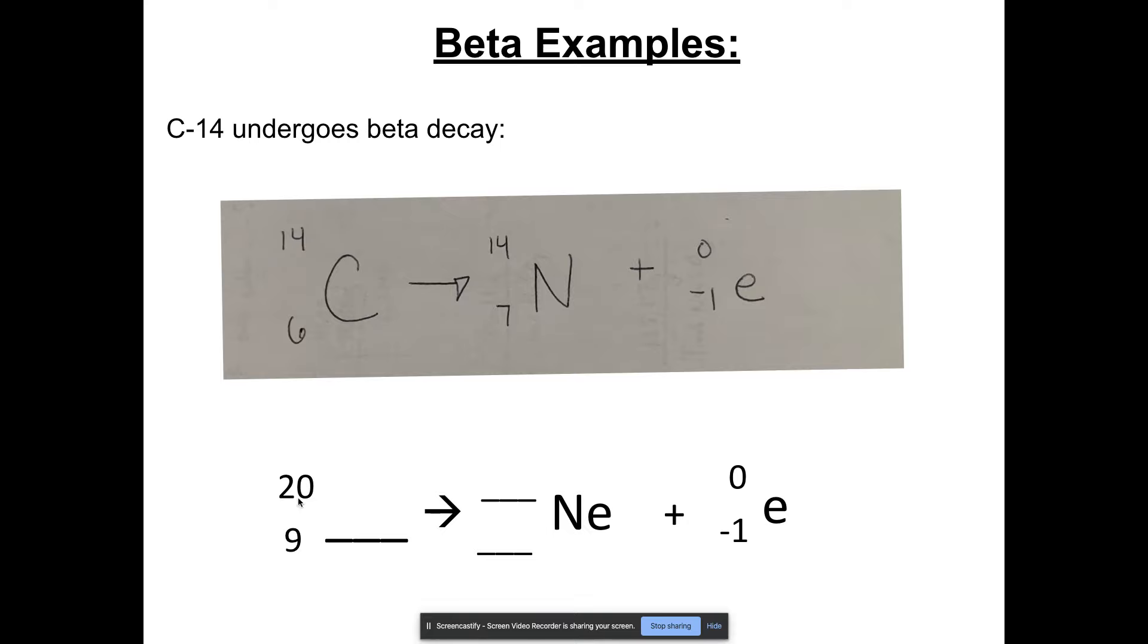All right, let's fill this in. So we've got here at the bottom, let's fill in some blanks. 20 and 9. Okay, 9 is my atomic number, which means my element on the periodic table is fluorine. This top number doesn't change because it's beta decay, so that means that would be 20. And then what would this need to be in order to equal 9? It would have to be 10. 10 minus 1 equals 9. And now we have our final isotope notation for all of our reactants and products.